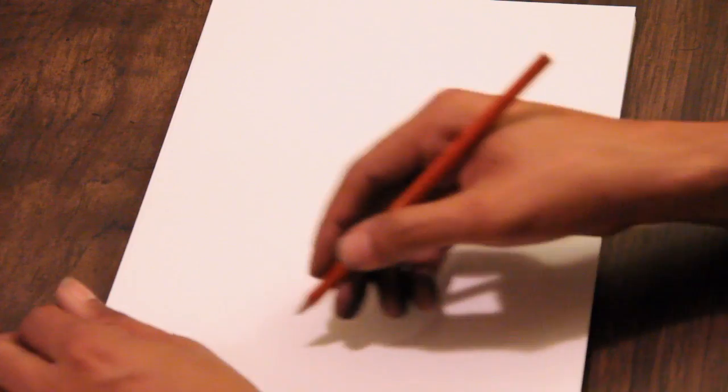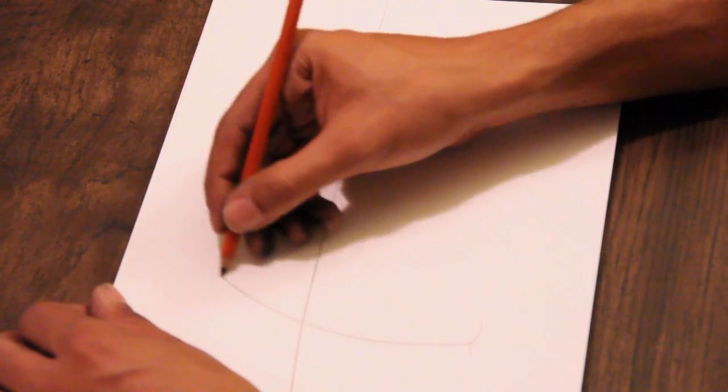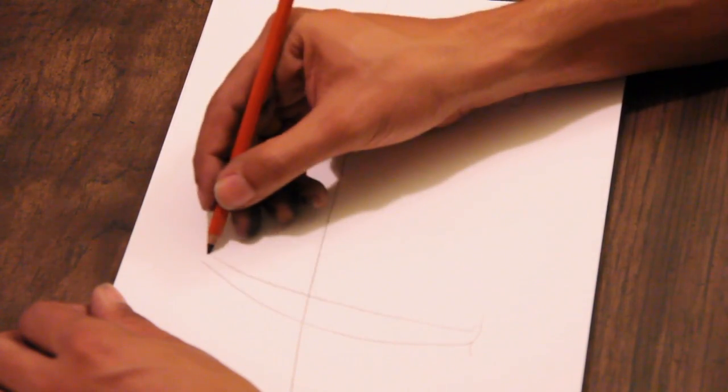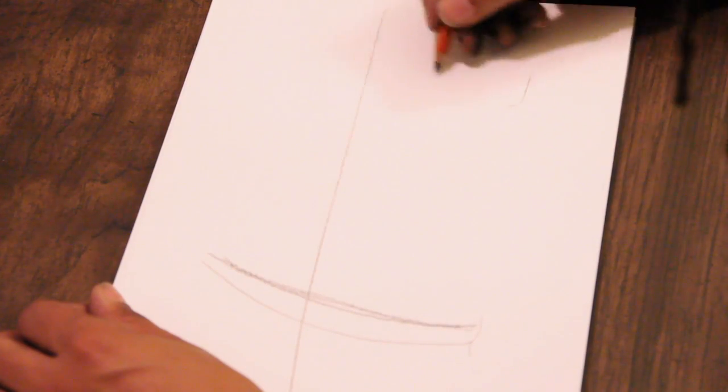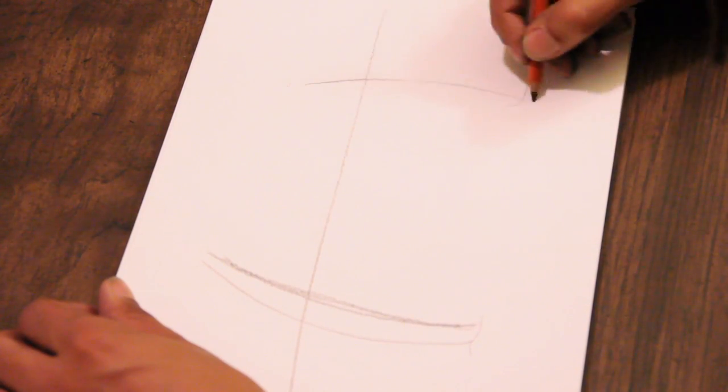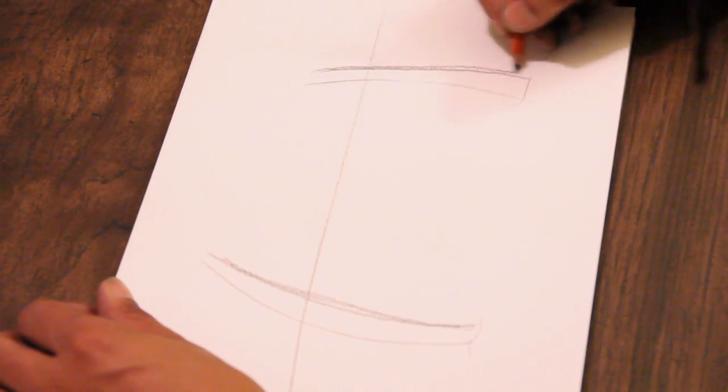I'm just going to have my charcoal pencil. I'm going to throw down my horizon line. And then right here, throw in some palm trees. And that's where my palm trees are going to be. And here's my second palm tree right there.